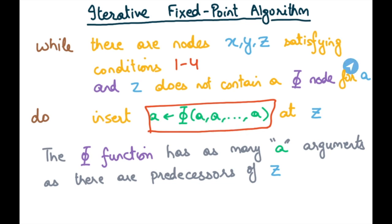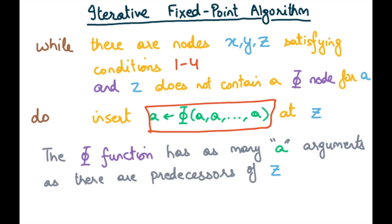This is a fixed-point algorithm, characterized by a set of constraints and an algorithm that keeps running until those constraints are satisfied. At every step, we make a change that moves us toward satisfying the constraints. Notably, this algorithm suffices to construct a program with the required set of phi nodes and also inserts the minimum such set.